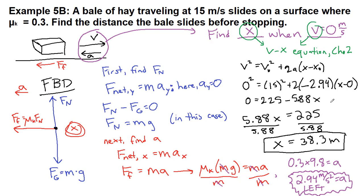And then once we have our acceleration, which is the end of the chapter four and five ideas, we then use it in our chapter two idea of kinematics. Now that we know what the acceleration is, we can solve for that x value when velocity equals zero.